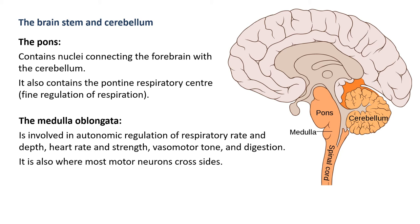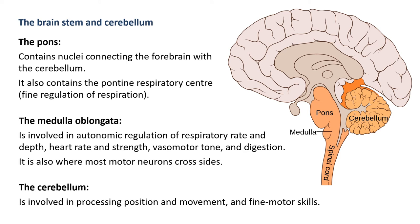Below the pons is the medulla oblongata - a very important area of the brainstem. It's involved in autonomic regulation of respiratory rate and depth, which we'll cover in respiratory. It also controls heart rate and strength plus vasomotor tone, which we'll cover in cardiovascular, and it controls digestion. Another key feature is that it's where most motor neurons cross over - called the decussation of the pyramids. The cerebellum is involved in processing position, movement, and fine motor skills.